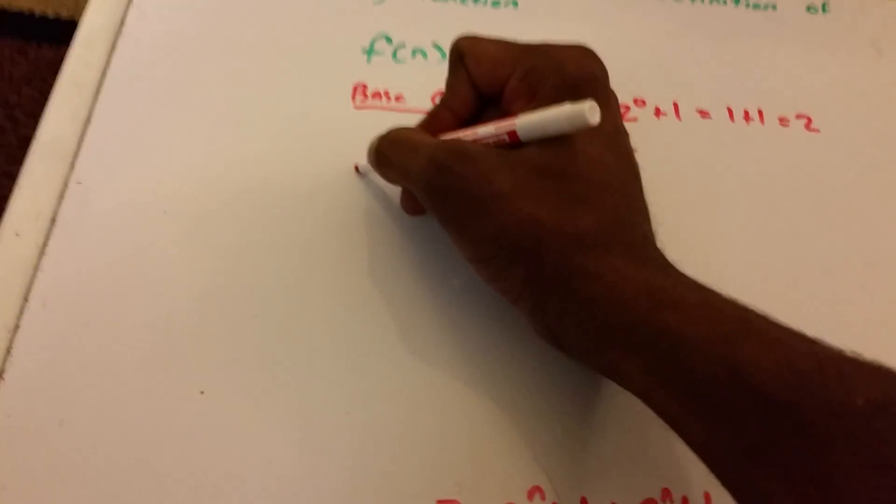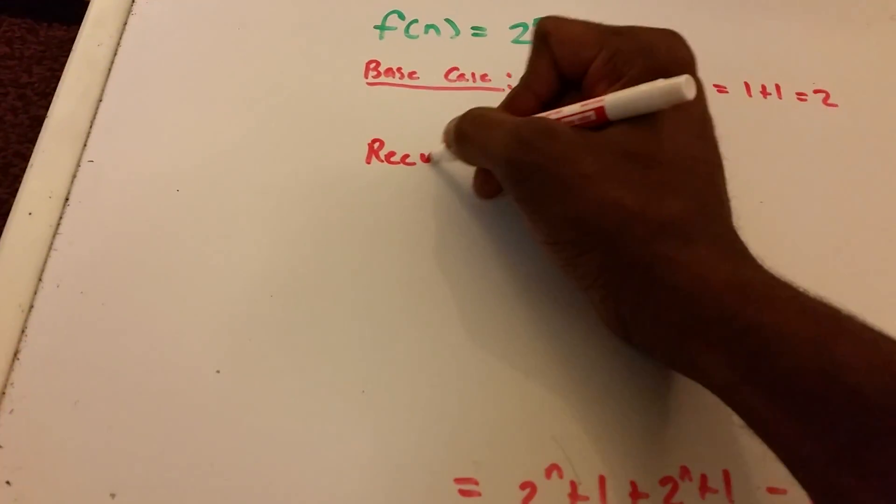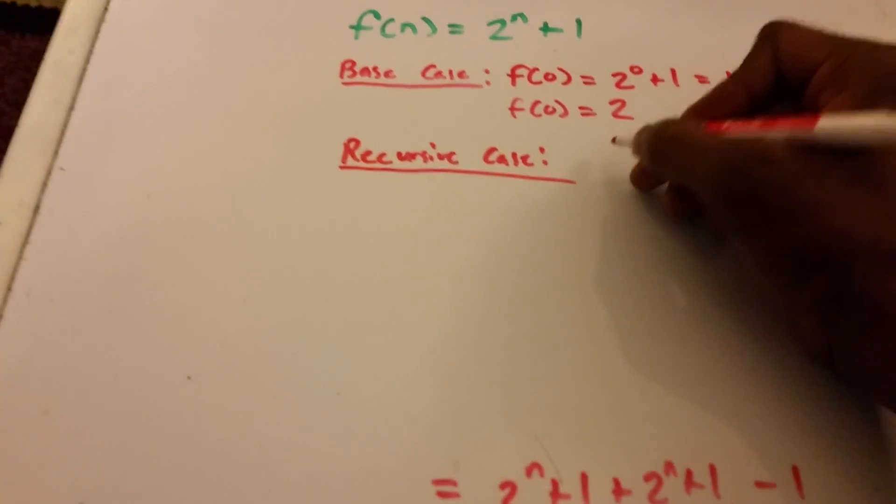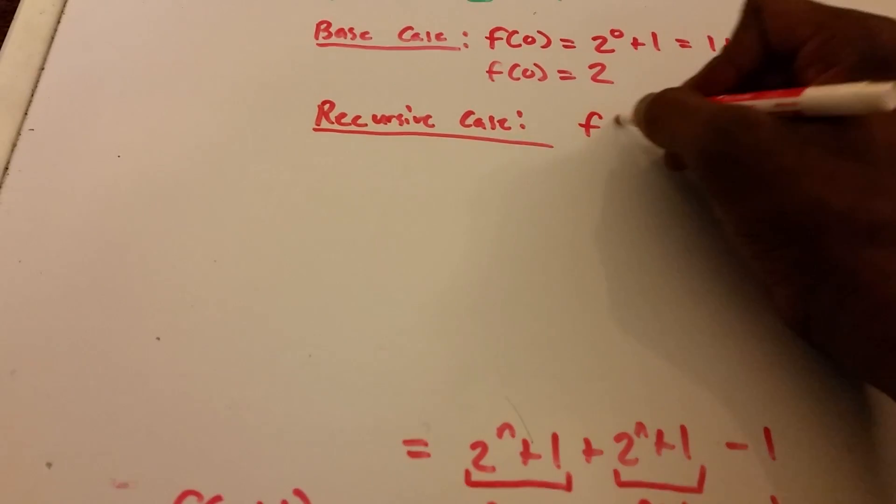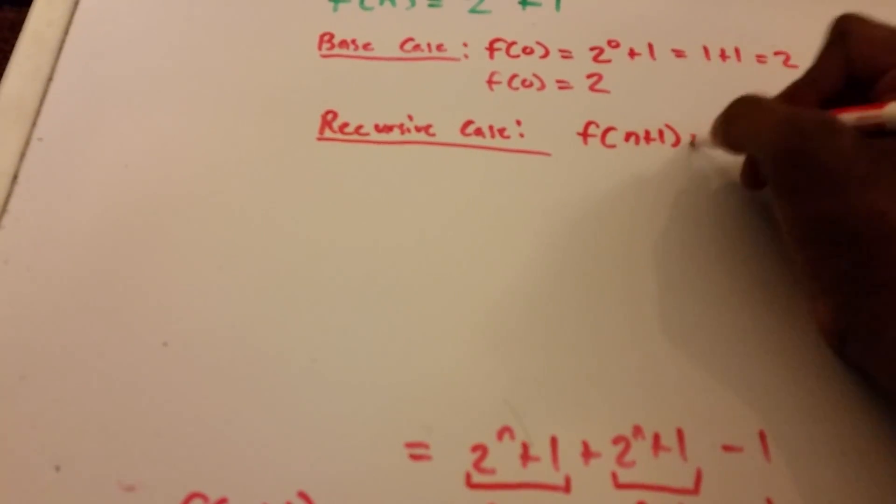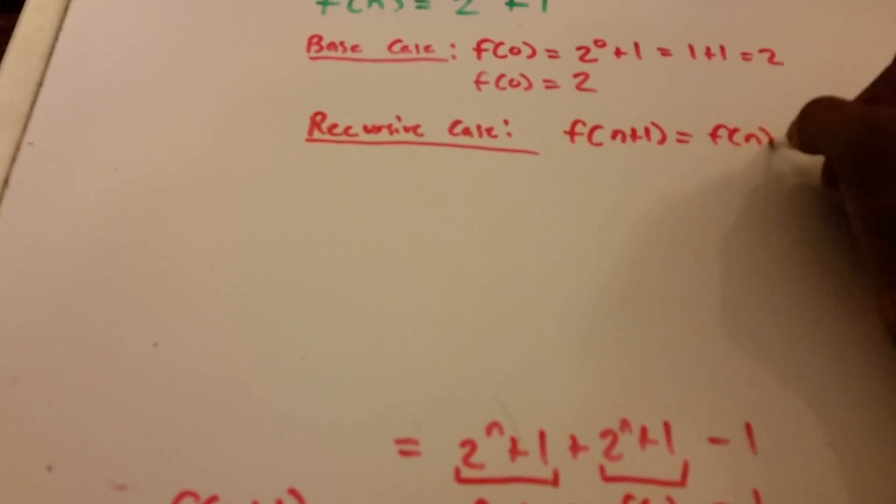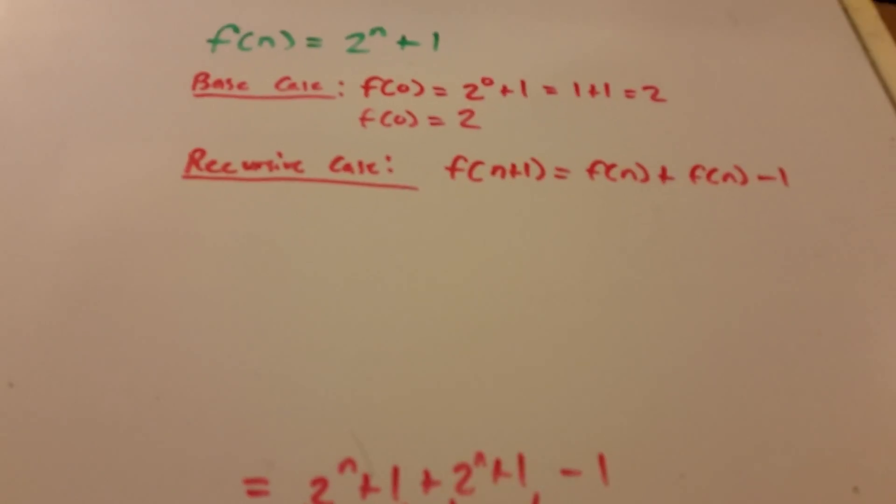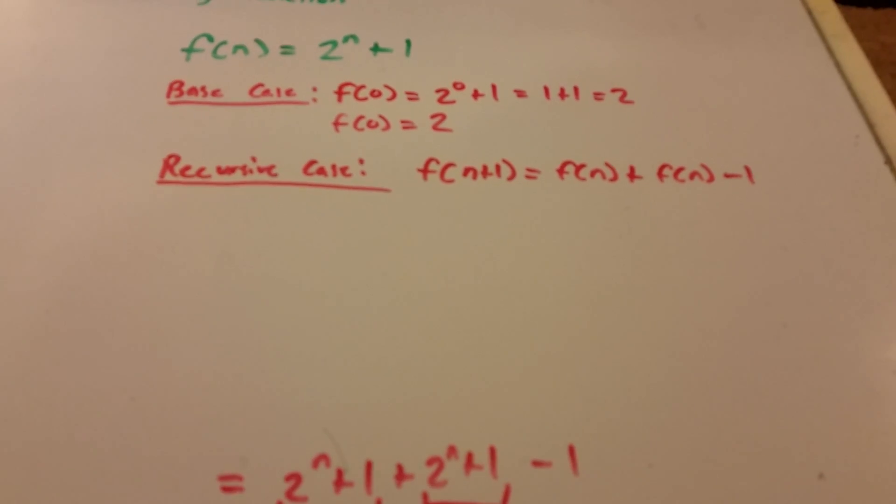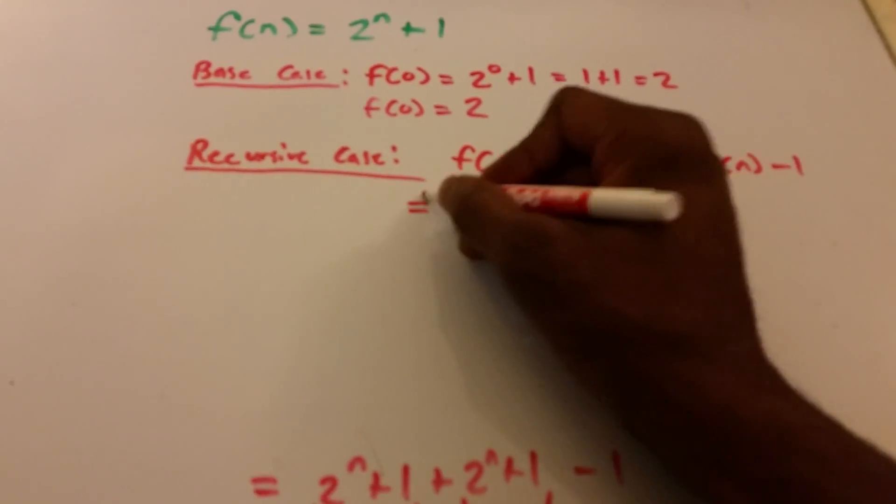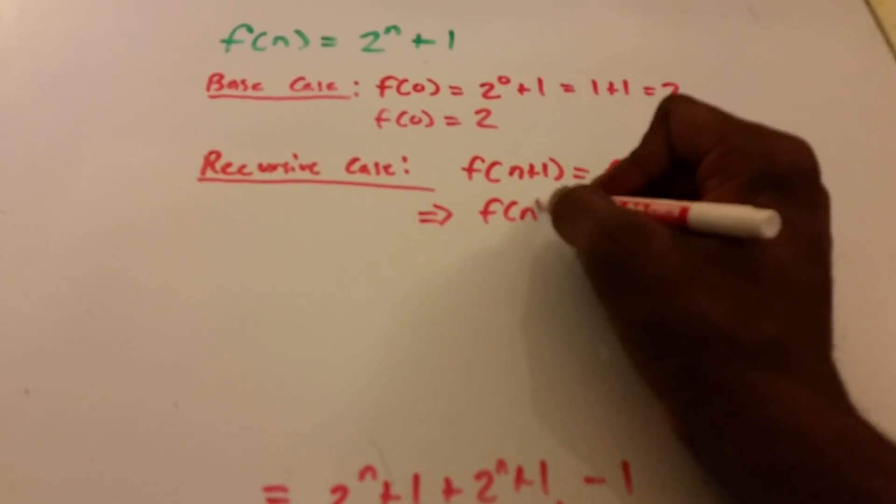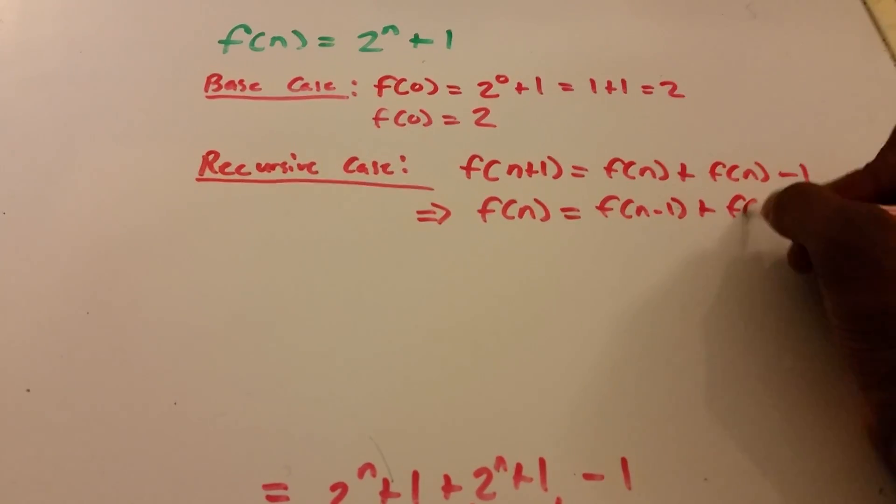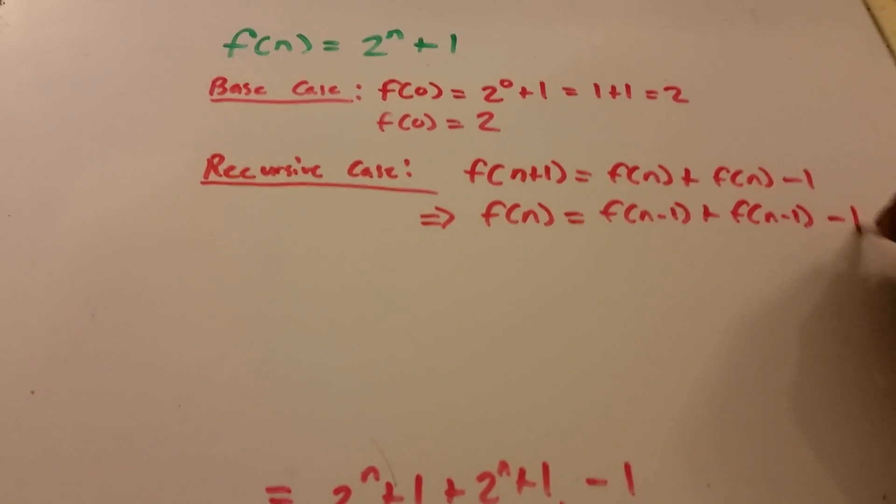And I'm gonna put recursive case is f(n+1) is equal to f(n) + f(n) - 1. So what this means is f(n) equals f(n-1) + f(n-1) - 1.